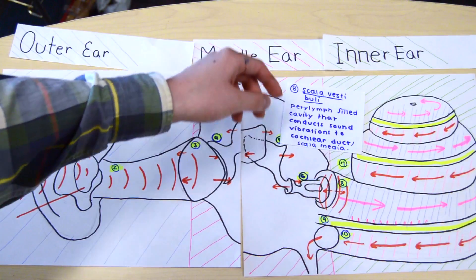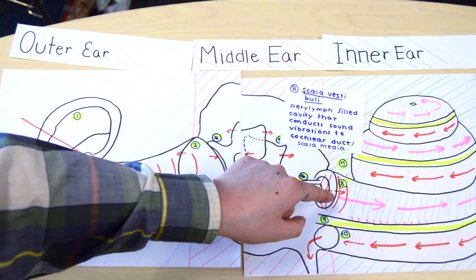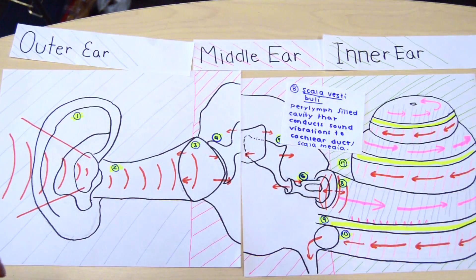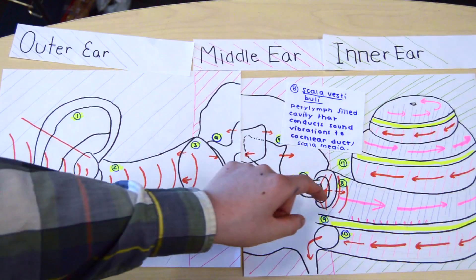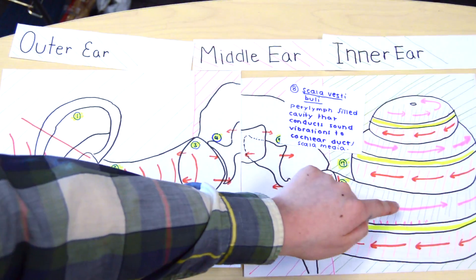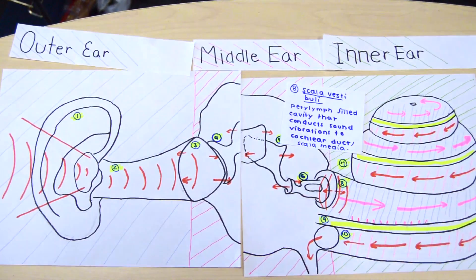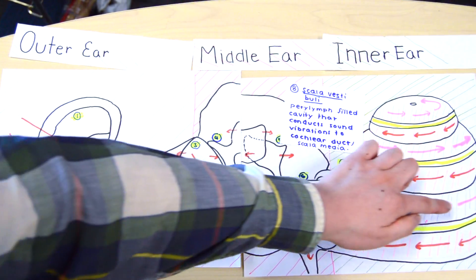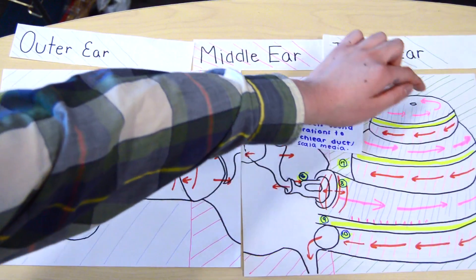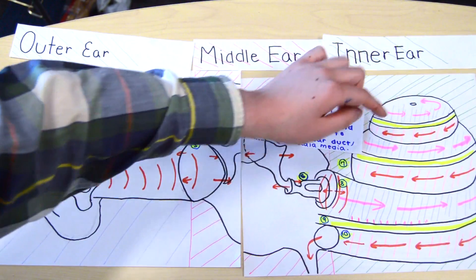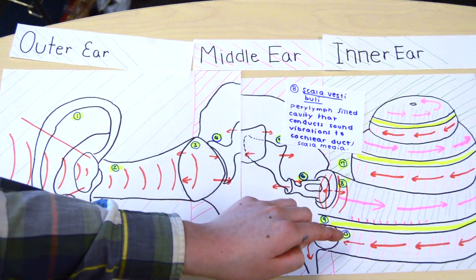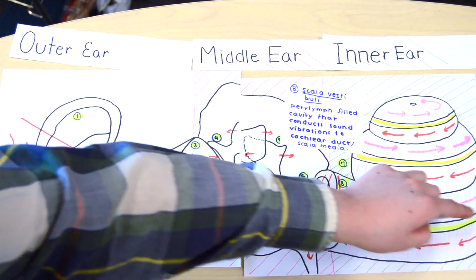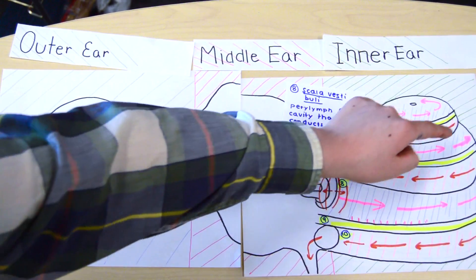The scala vestibuli is the initial channel in which the sound vibrations move through the cochlea. It is a perilymph-filled cavity that conducts sound and vibrations to the cochlear duct, or scala media. The scala vestibuli is highlighted in purple and is a channel which carries up the cochlea, while the scala media is the highlighted middle portion of the cochlea.